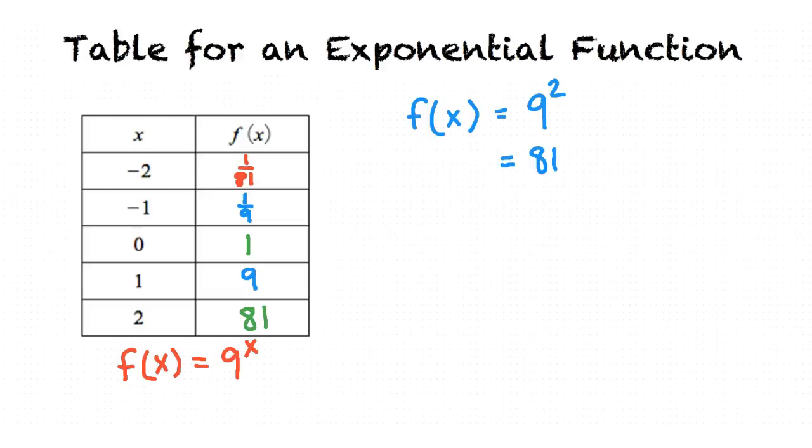That makes sense. I think I understand this topic but let me summarize it to get a better understanding. In summary, we first replace the input for x in the equation and solve for the output of that equation for that specific input. That's correct. It looks like you understand the topic table for an exponential function.